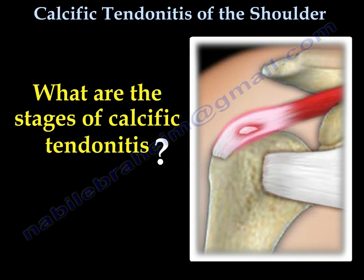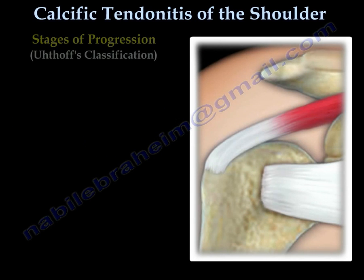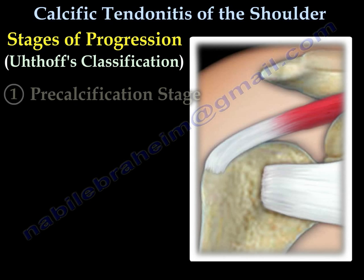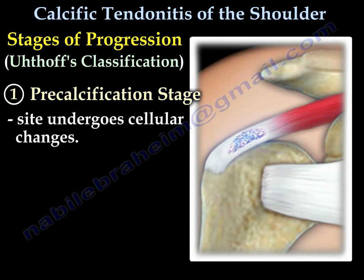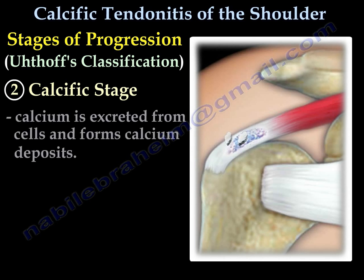What are the stages of calcific tendinitis? Stage 1 is the pre-calcification stage, where the tendon site undergoes cellular changes. Stage 2 is the calcific stage, where calcium is secreted from the cells and forms calcium deposits in the tendon.